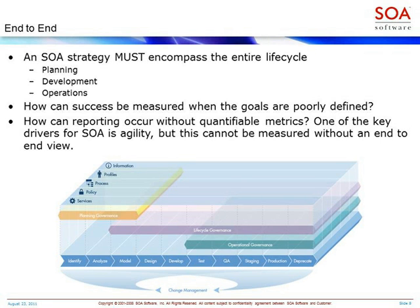The reason for this is: how can you actually measure your success when your initial goals are poorly defined? If you're just implementing operational governance, you don't really know what the context is of the governance activities you're implementing. You don't understand how they relate back to business strategic initiatives, what the budget is, or what the cost savings goals might be. It's very difficult to report on any kind of success if there are no quantifiable metrics and no goals established in the first place. So it's difficult to do development and operational governance without having some kind of planning governance put into place.